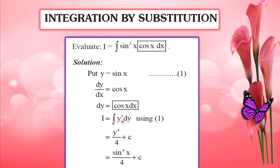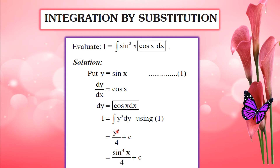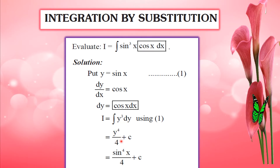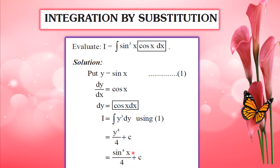Applying the power rule, y cubed integrates to y raised to 4 divided by 4. Substituting back, the answer is sin raised to 4 x divided by 4, plus c.